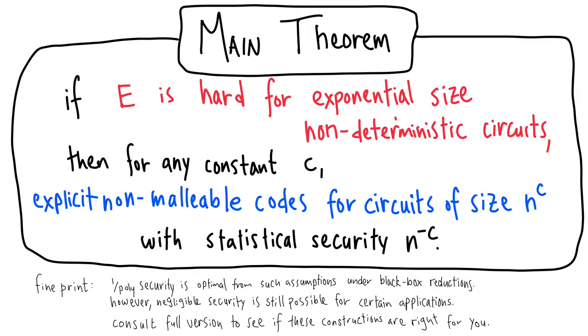In particular, you will see the following theorem: If E is hard for exponential size non-deterministic circuits, then for any constant C, explicit non-malleable codes for circuits of size n to the C exist with statistical security n to the minus C.